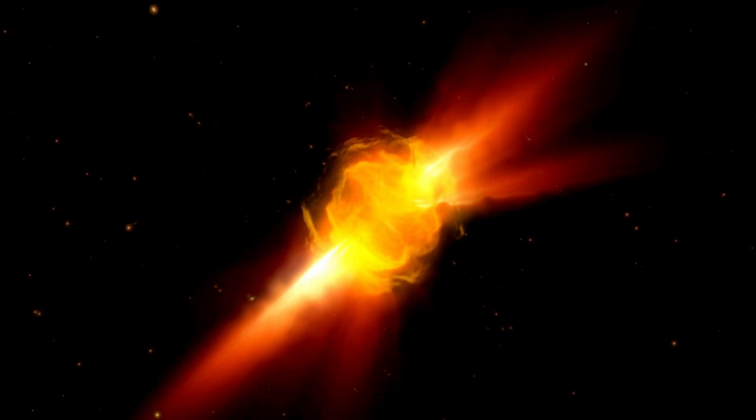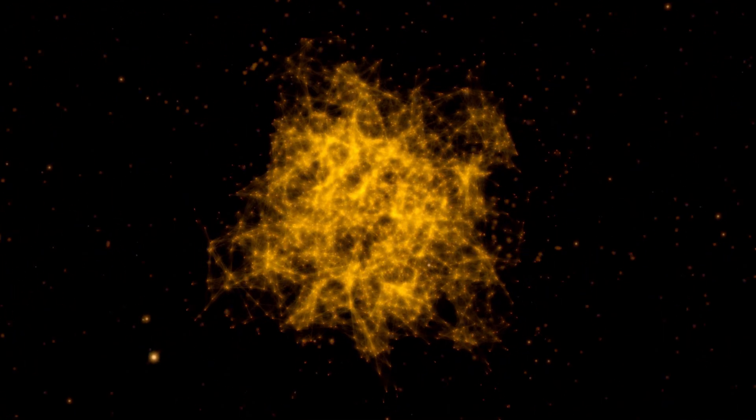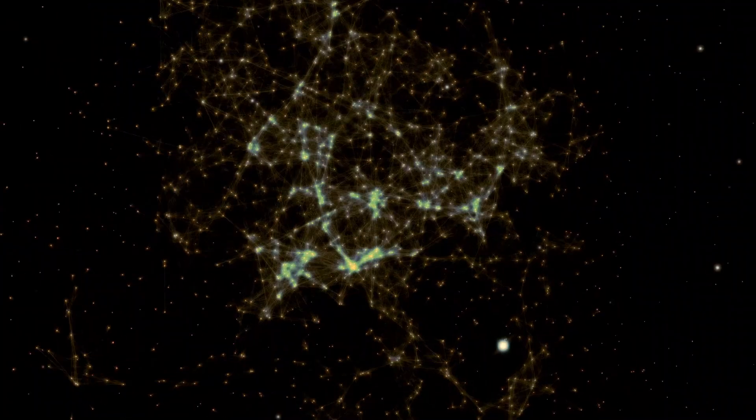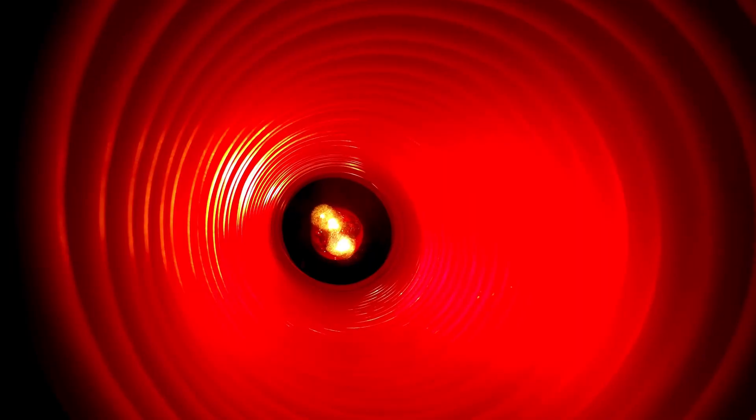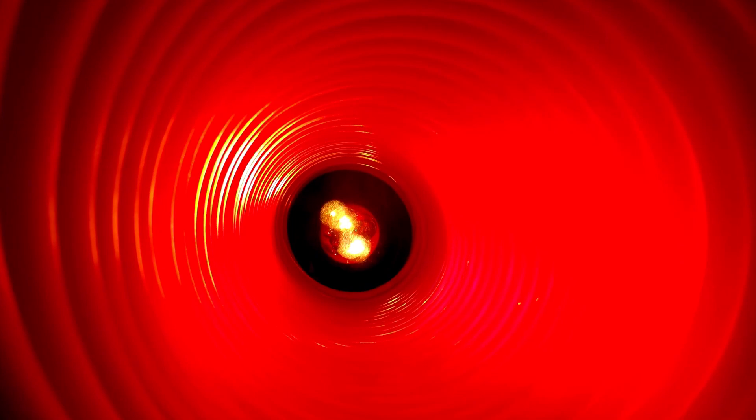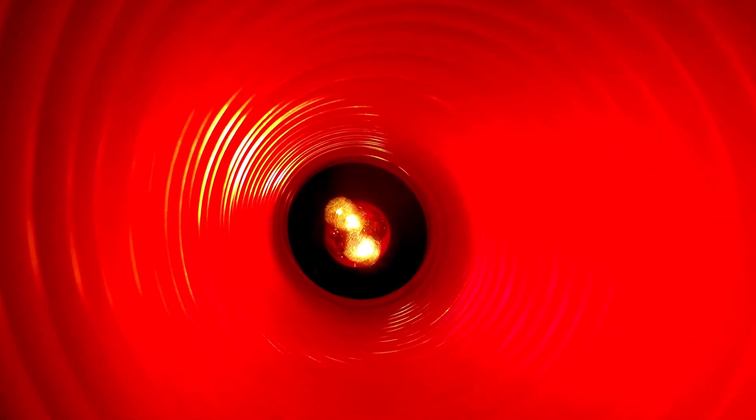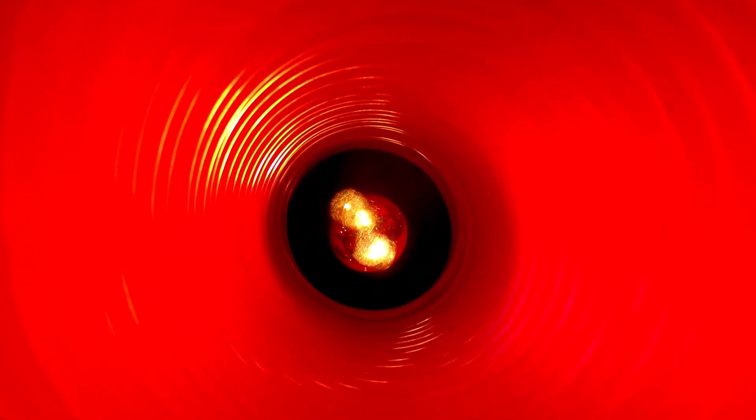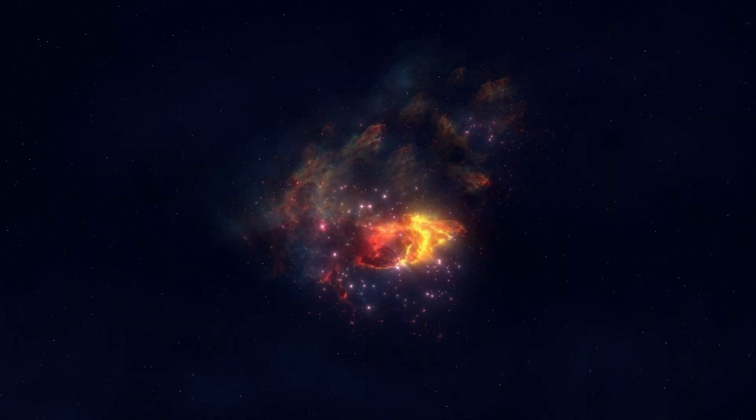In the vastness of our sky lies Betelgeuse, a red giant star located in the Orion constellation. This star is so immense that if it were positioned where the sun is, its outer surface would reach the orbit of Jupiter, making it incredibly massive. Betelgeuse is unstable and nearing the end of its life, with the potential to explode in a supernova that would be visible from Earth.